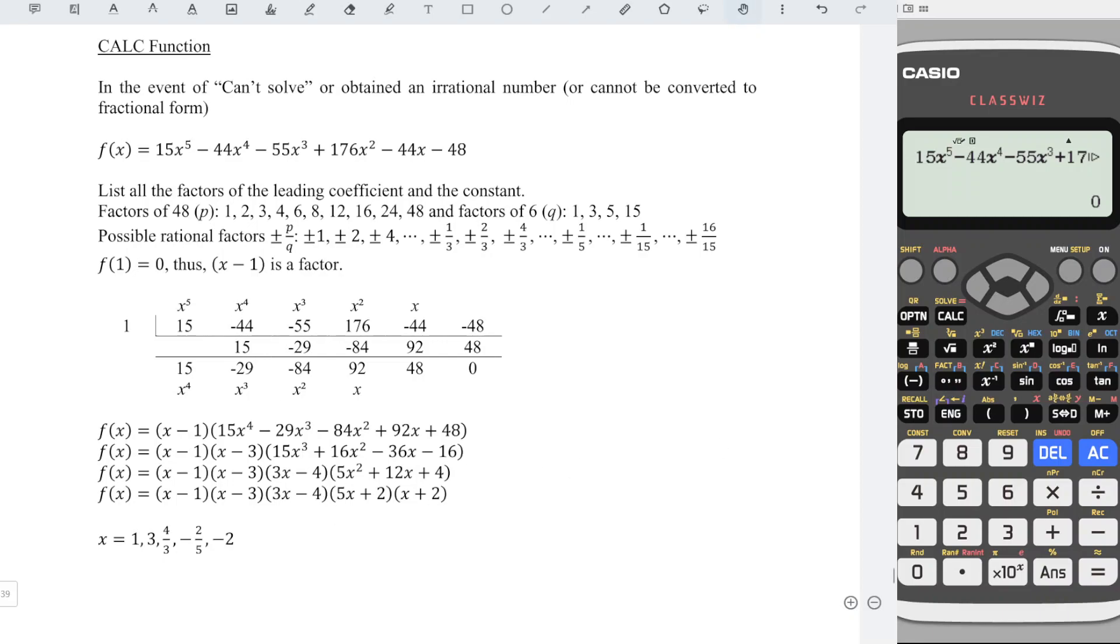So we have menu, down and down. Look for the equation function, press equal. We should look for polynomial to degree 4, and there are all the coefficients here. Accordingly, we have 15, press equal, negative 29, equal,